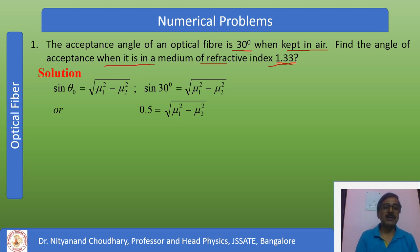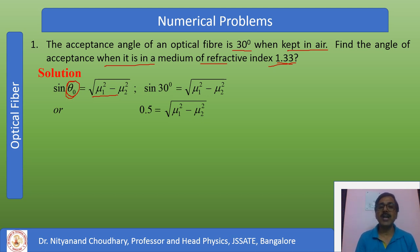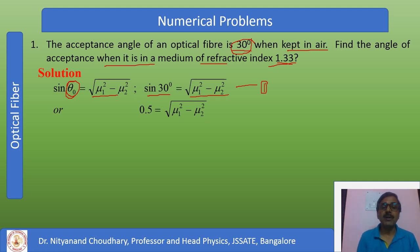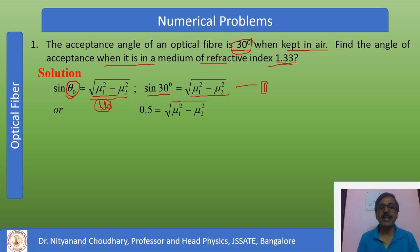We know that sine of acceptance angle equals sqrt(mu1² - mu2²). Theta naught is given as 30 degrees, so sine 30° = sqrt(mu1² - mu2²). This is equation number 1. Sine 30° = 0.5, so 0.5 = sqrt(mu1² - mu2²). This is the acceptance angle formula for air medium, where mu0 = 1 since we are launching from air.